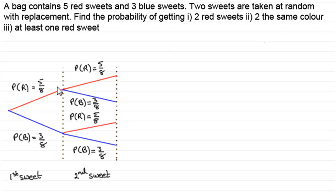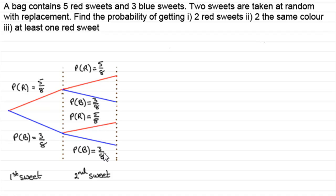If you drew up a tree diagram for that, briefly, for your first sweet you would have two outcomes. You could either get a red sweet or a blue sweet. The probability of a red sweet was five out of eight, and the probability of a blue sweet was three out of eight. Because we put the sweet back in the bag, we could take out a red or blue again with the same probabilities. So we constructed a tree diagram like this.